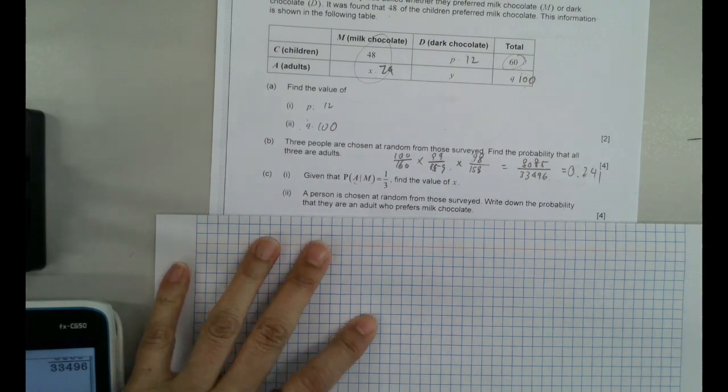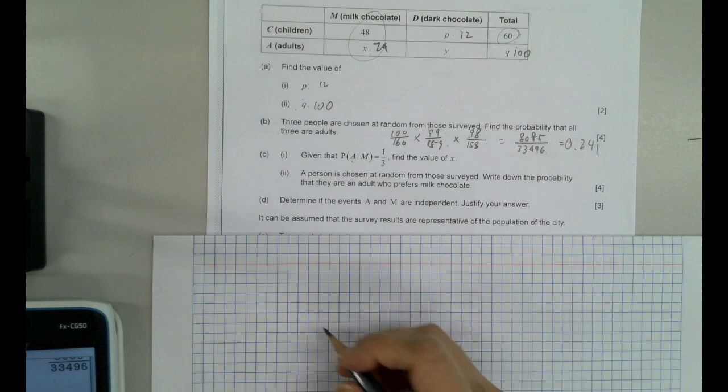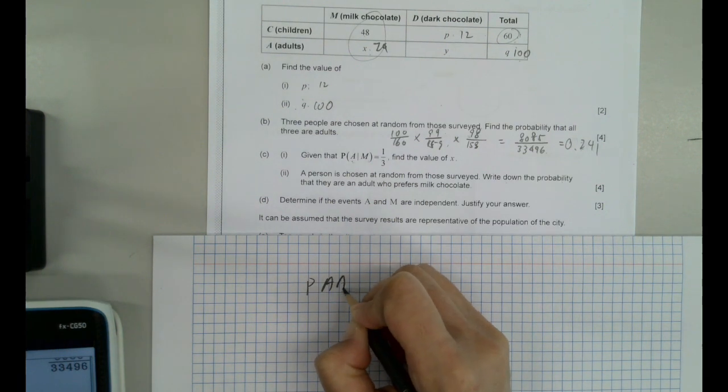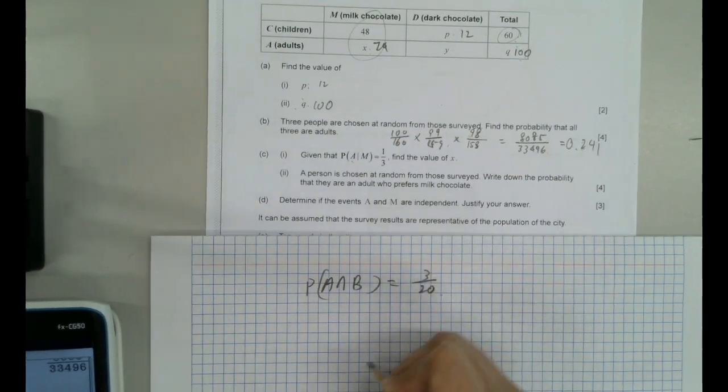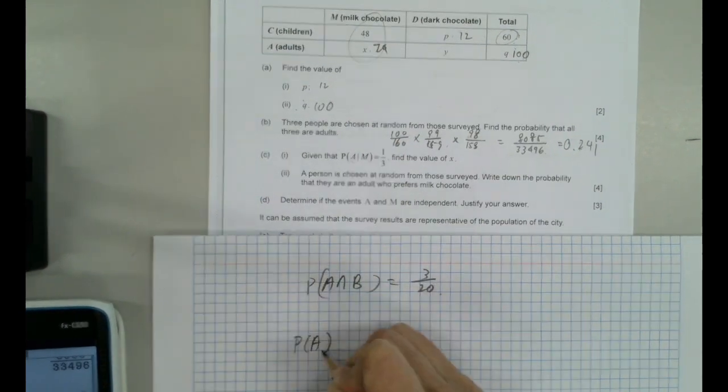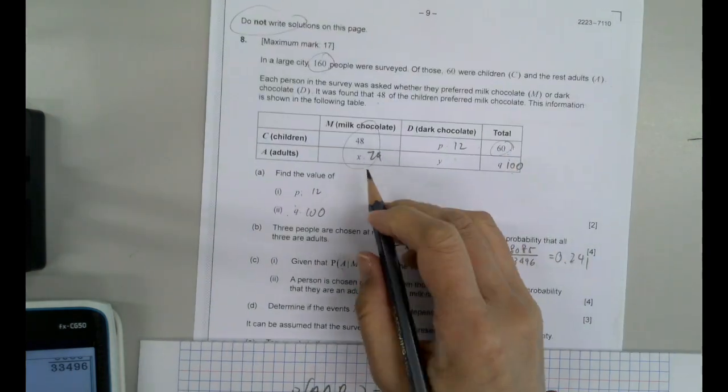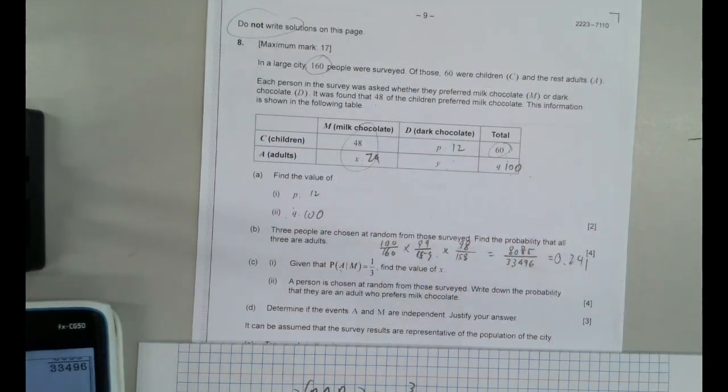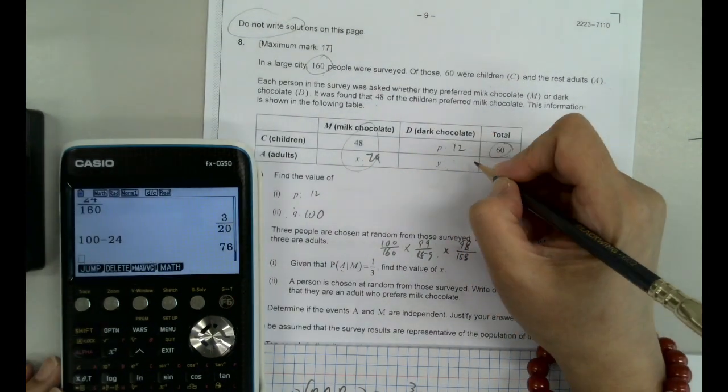Now, the classic here we come. Determine if A and M are independent. So we found A intersect M just then is 3 over 20. So now we want probability of adult, which is, we need to find Y. So X is 24 plus Y equals to 100. So 100 minus 24. Since it's a GDC paper, I'll keep using it.